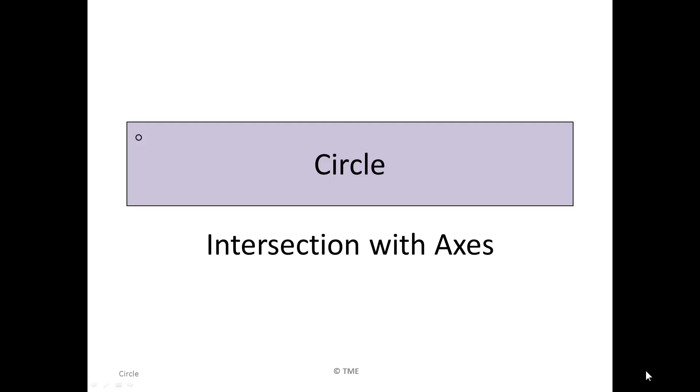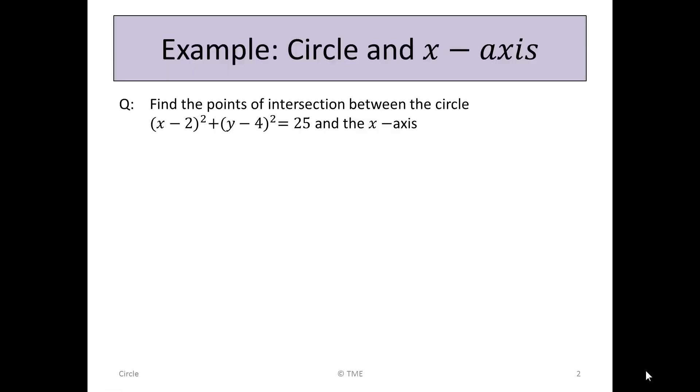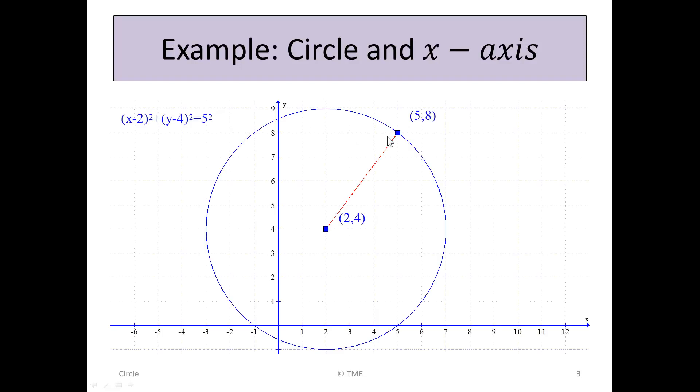Circle intersection with axes. Find the points of intersection between the circle (x - 2)² + (y - 4)² = 25 and the x-axis.